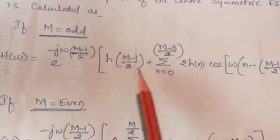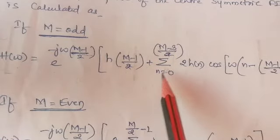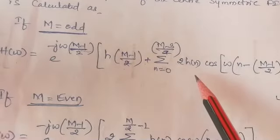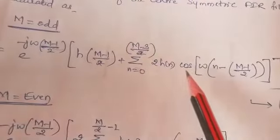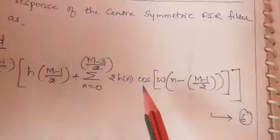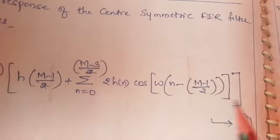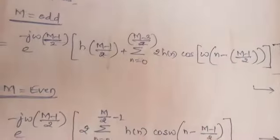In square bracket, h(M minus 1 by 2) plus summation n equal to 0 to (M minus 3 by 2) of 2h(n) causal FI filter cosine of ω times (n minus (M minus 1 by 2)). It is for when M is odd.